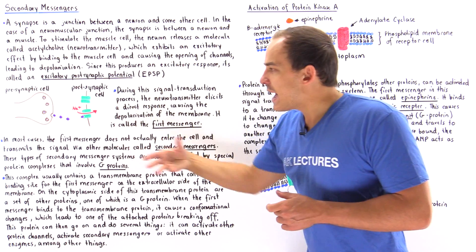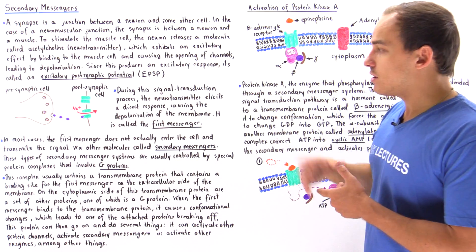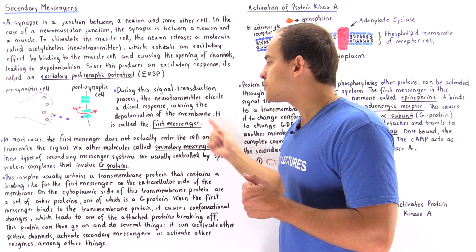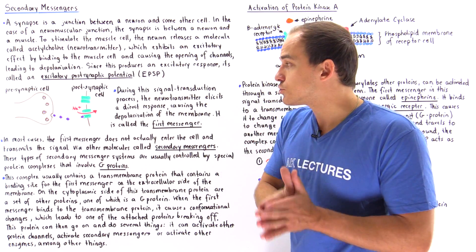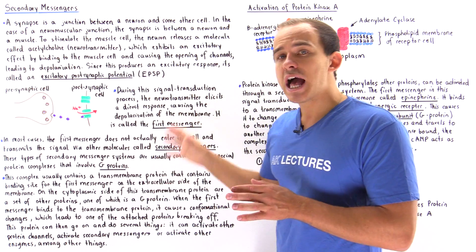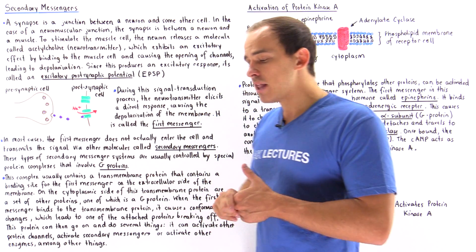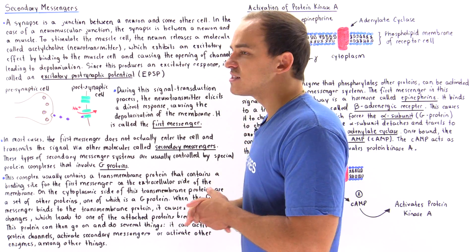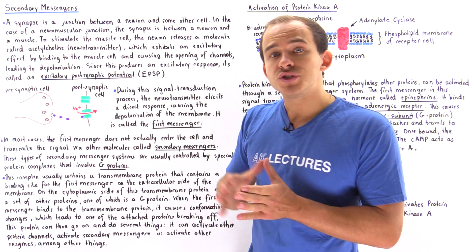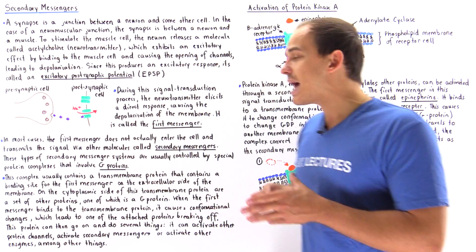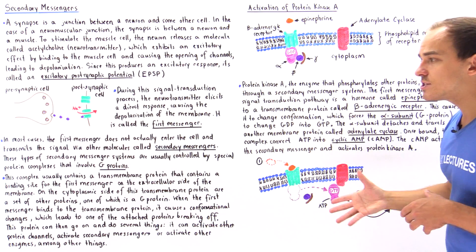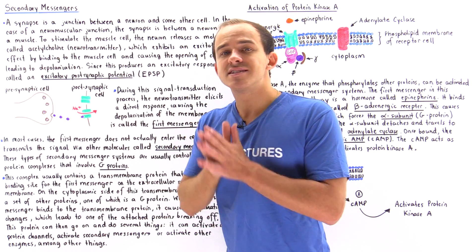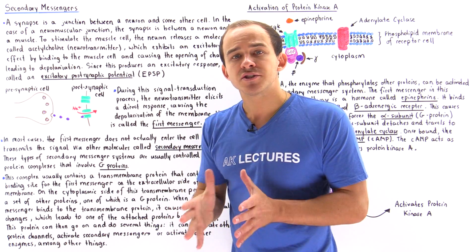In the pathway described so far, only the first messenger is involved, and it binds and causes the action potential to take place. However, in most other signal transduction processes, we have another molecule known as the secondary messenger, and these types of pathways are known as secondary messenger systems.